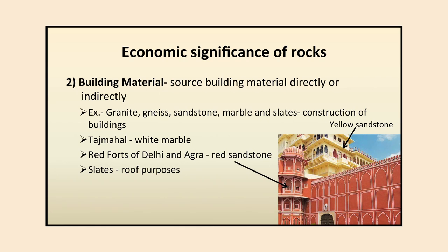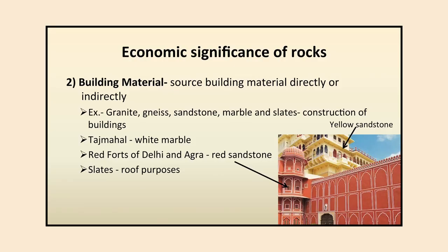The second important significance is that rocks provide building material, directly or indirectly. Examples include granite, gneiss, sandstone, marble, and slate used for construction. The Taj Mahal is made of white marble, and various forts and buildings are made of yellow and red sandstone. Historically, people used locally available rock materials — red sandstone was used for the Red Forts of Delhi and Agra, and slate is used for roofing purposes in various areas.